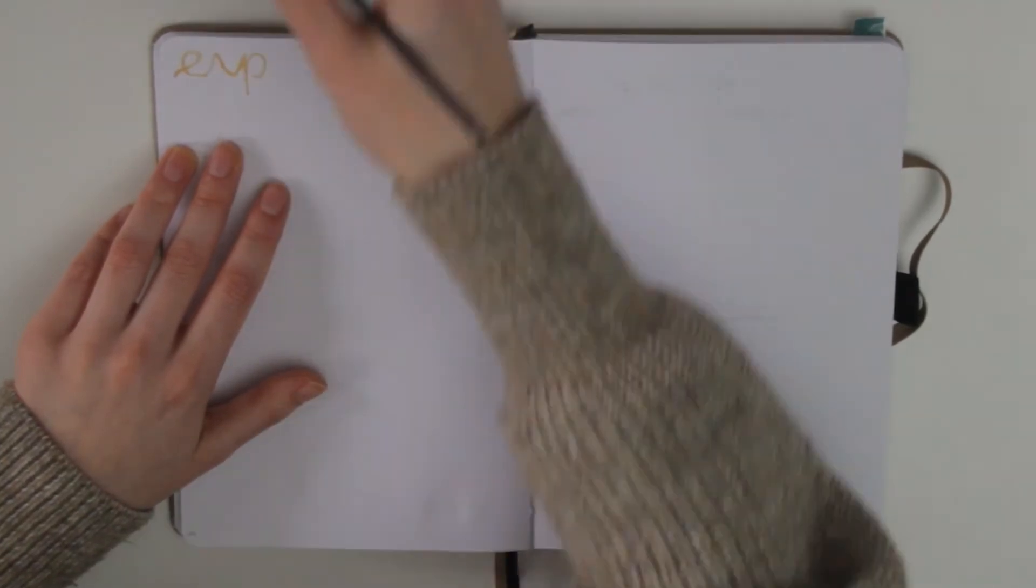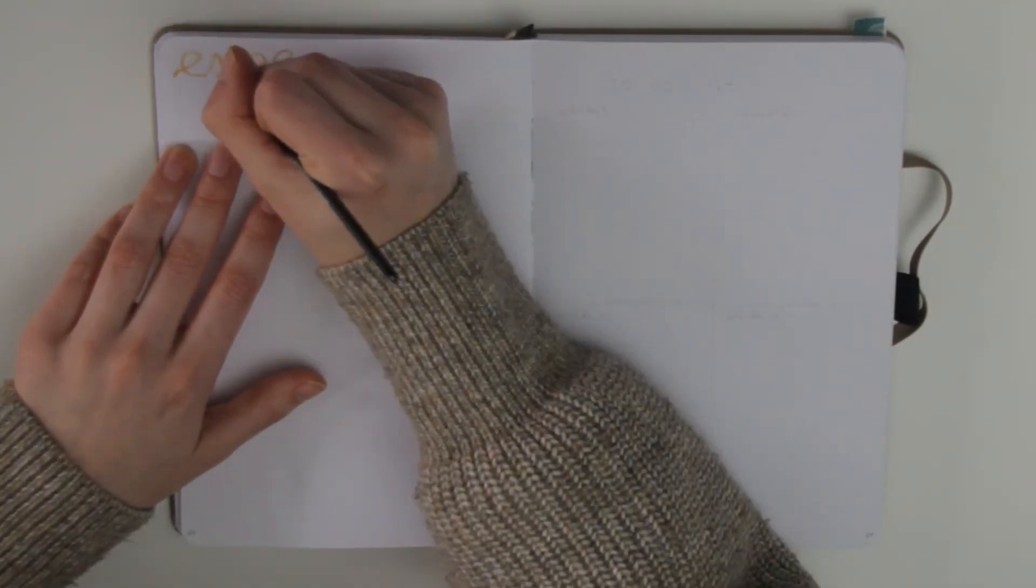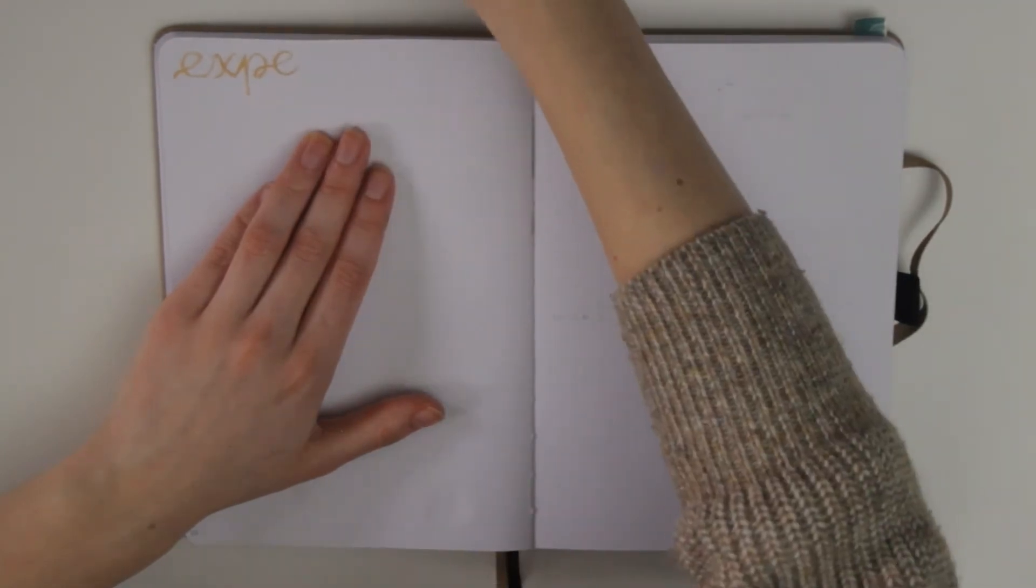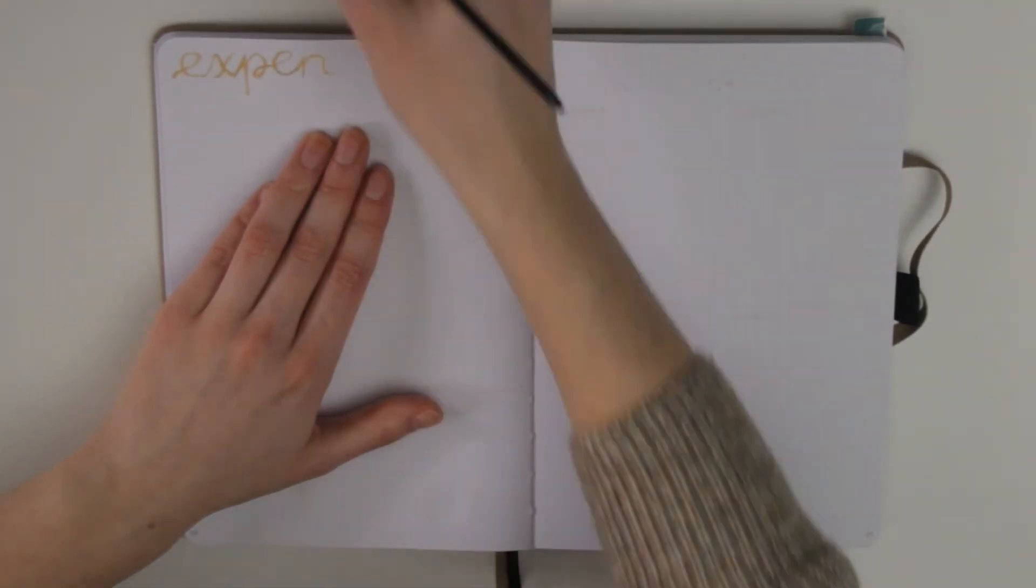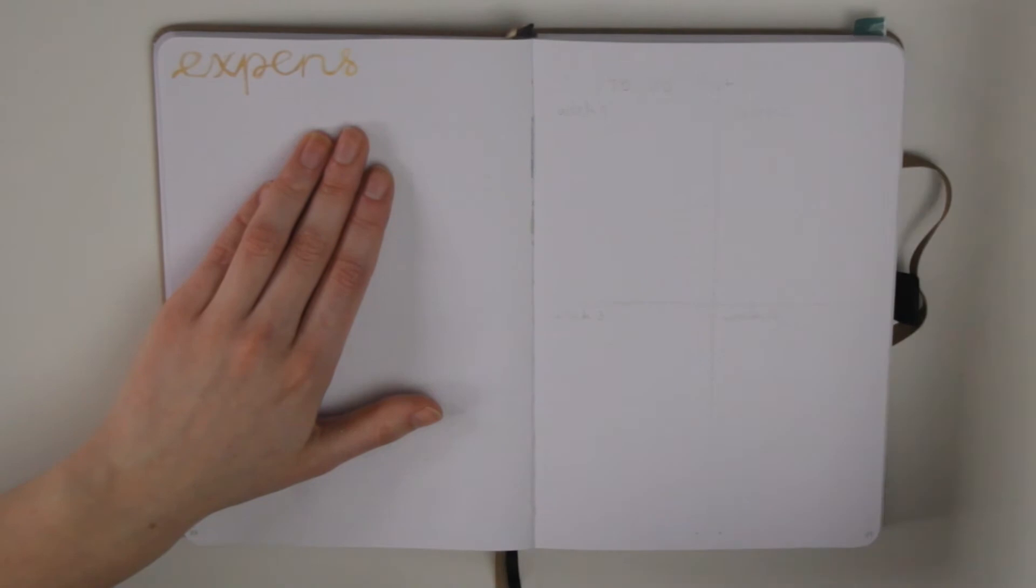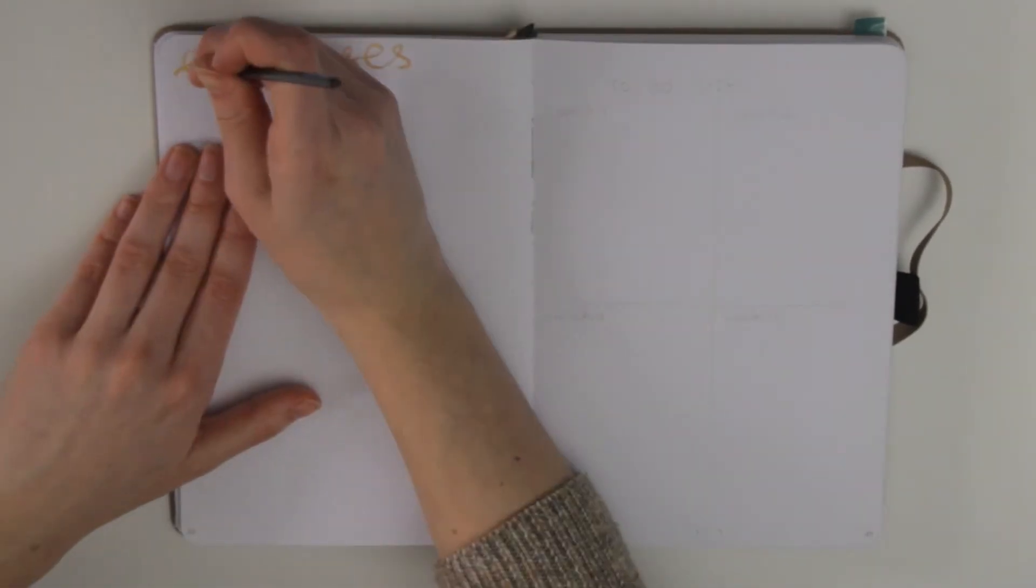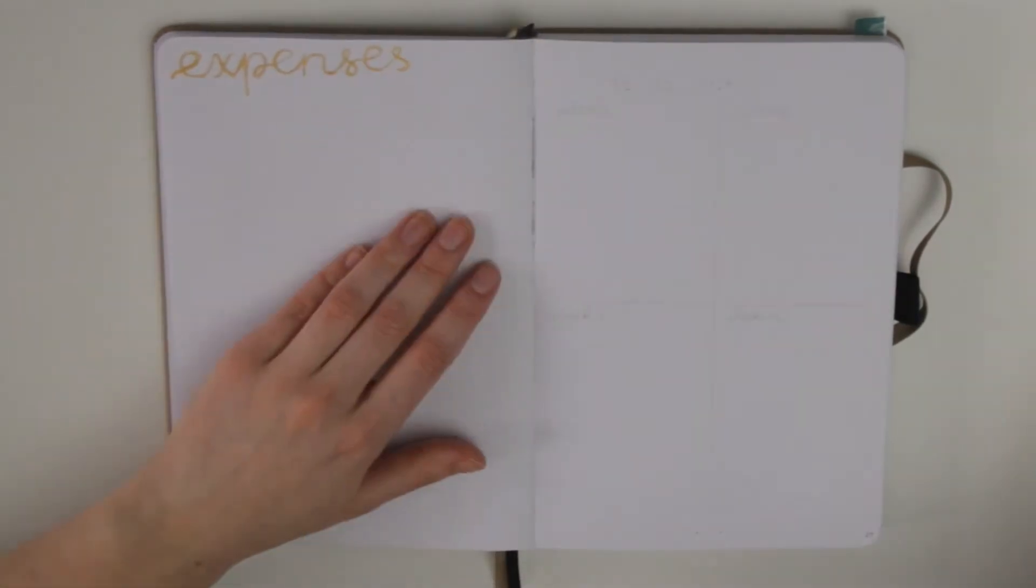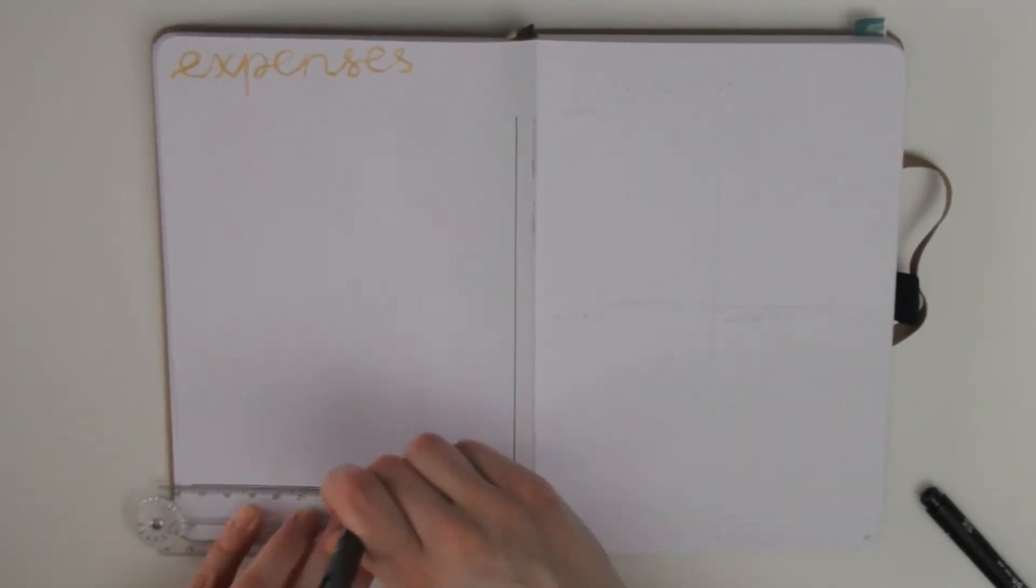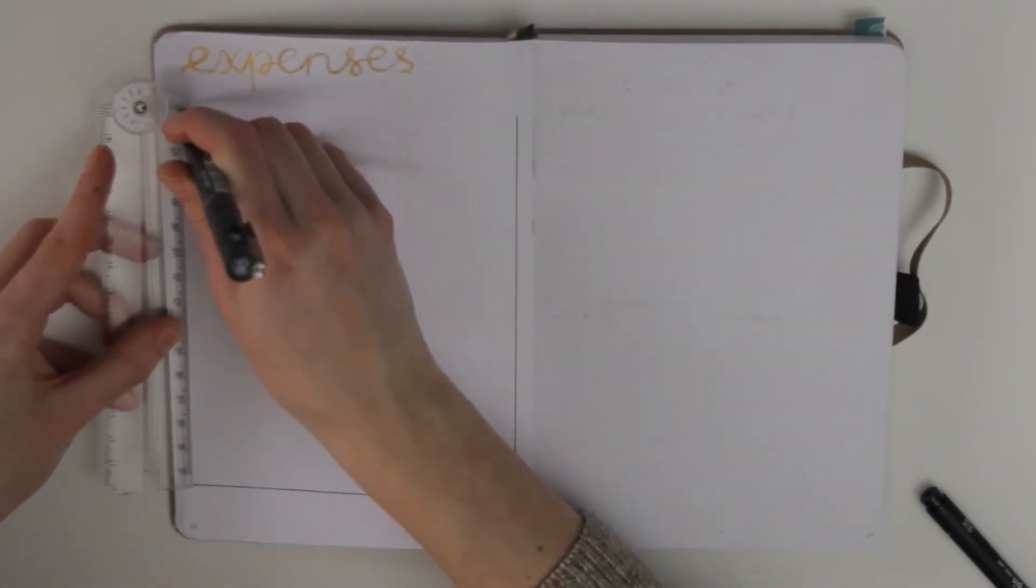On to the next page which is going to be my expense tracker. And I just wrote out the title in this gold watercolor which I think looks very very fancy. And it took a while to actually write it out because I used a very small brush which was a little bit hard to control but I did manage to get it down eventually.